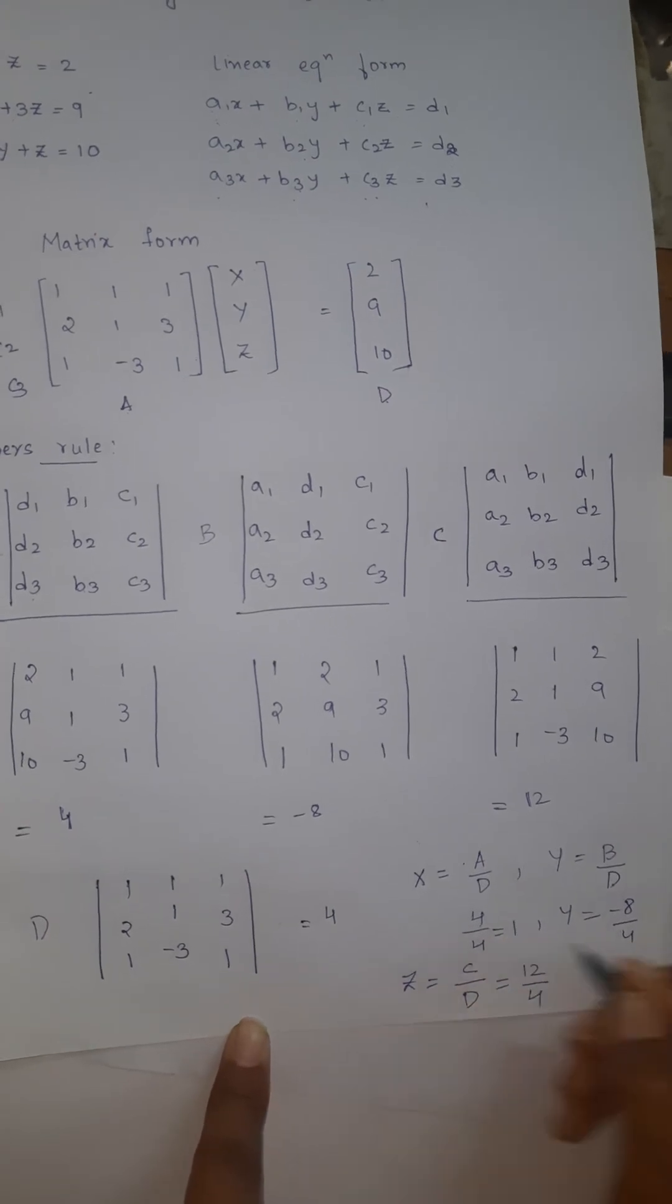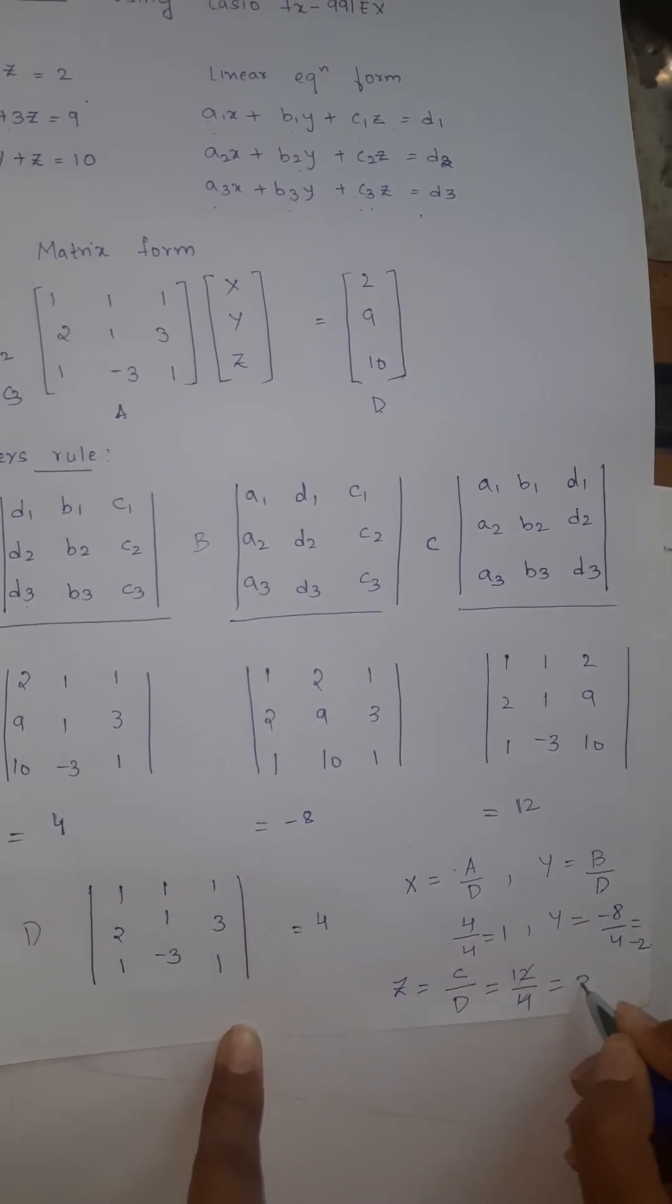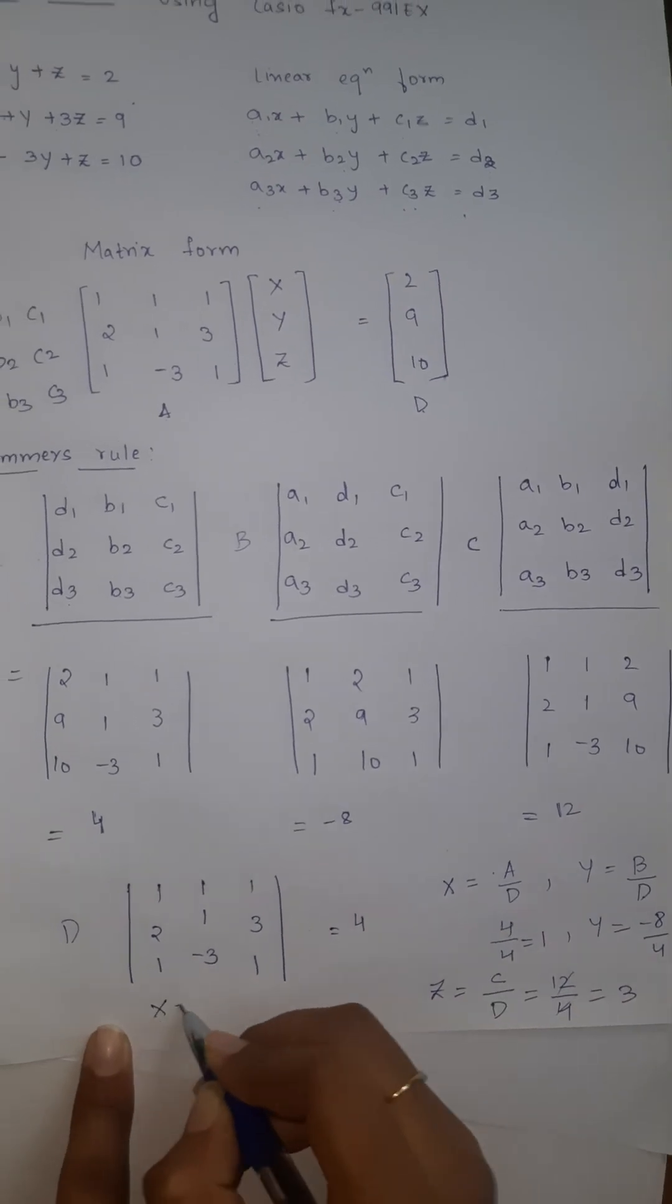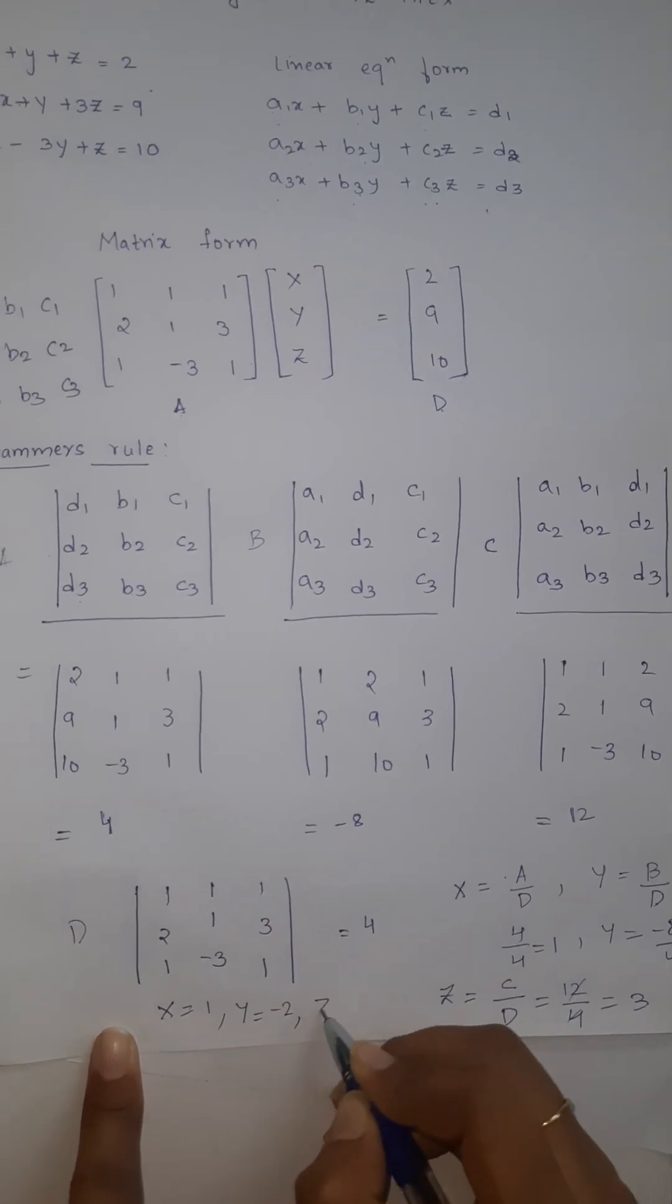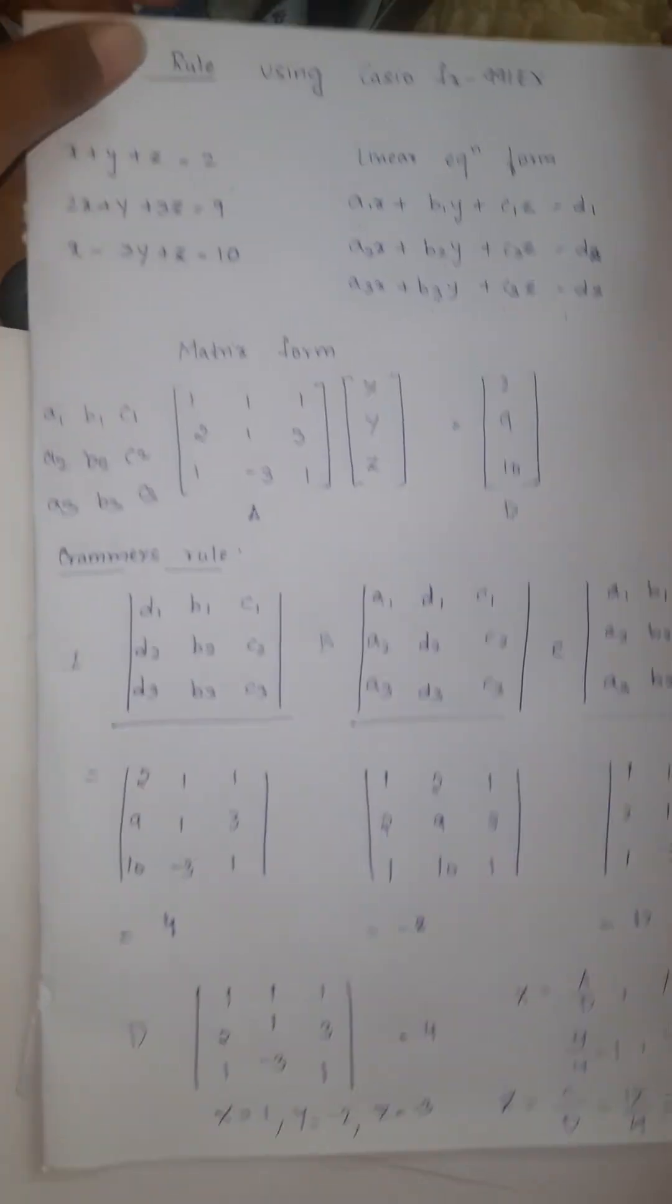This is 1, minus 2 and this is 3. That is how we find, this is the Cramer's rule. We found X, Y and Z. X is 1, Y is minus 2, Z is 3. That is all about Cramer's rule. Thank you.